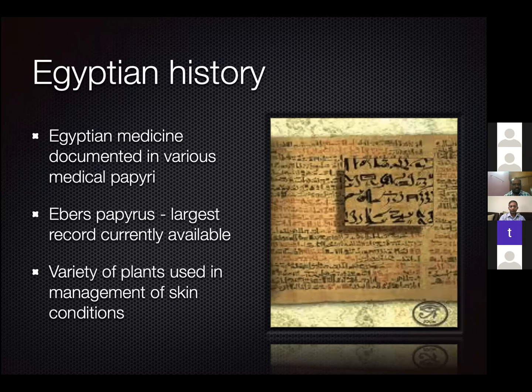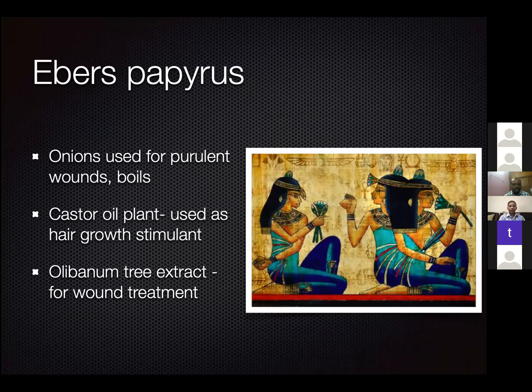Considering it was written in 2000 BC — 4,000 years ago — the variety of conditions mentioned and treatments described is truly astounding. The Ebers Papyrus mentions onions used for purulent wounds, boils, and as an anti-inflammatory agent. It's still used as a household remedy in many parts of the world. About 50 years ago it was found that onions contain alliin and allicin, which have anti-inflammatory properties.